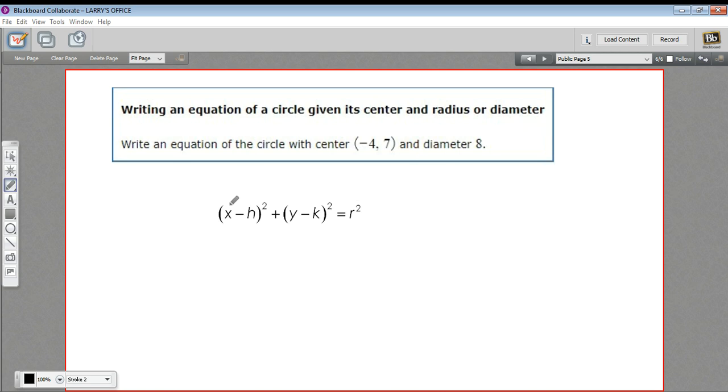So the thing to do here is to use this standard form: x minus h quantity squared plus y minus k quantity squared equals r squared, where h and k are the center and r is the radius.